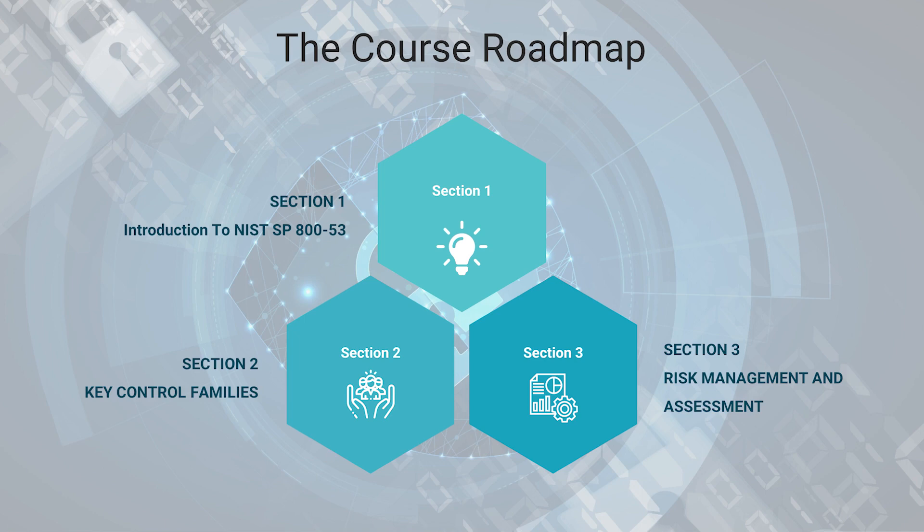Section 1 introduces you to NIST SP 853. Section 2 talks about the key control families, and Section 3 will take you through the risk assessment and management processes and capabilities, including the necessary tooling required to do that.